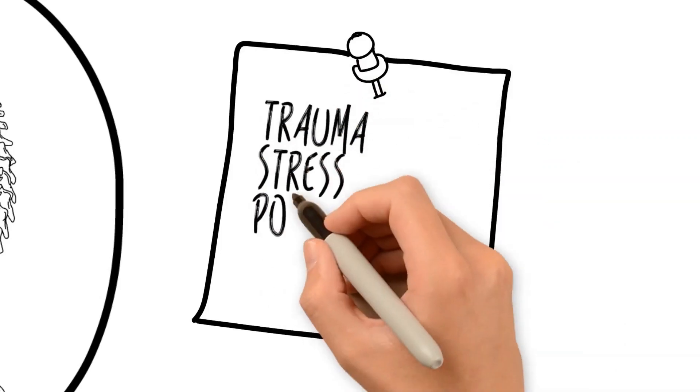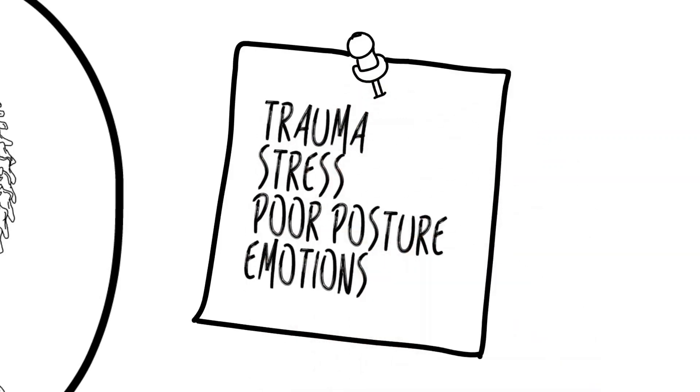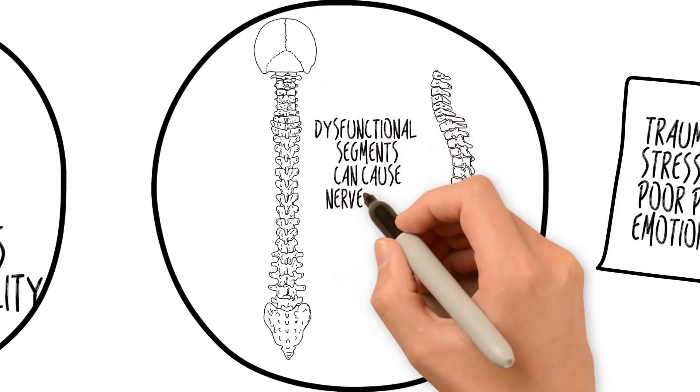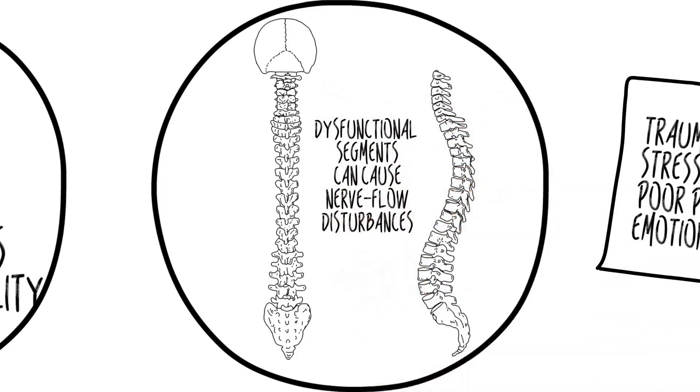Lifestyle factors like trauma, stress, poor posture, and even emotional strain can cause spinal segments to move in a dysfunctional way. These dysfunctional segments can cause disturbances in the communication between your brain and your body.